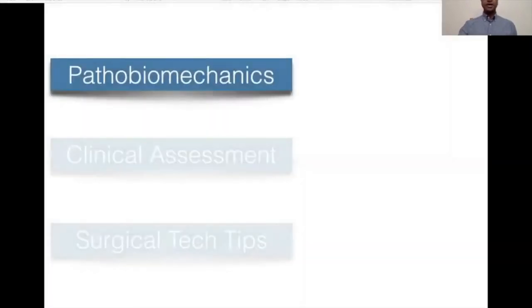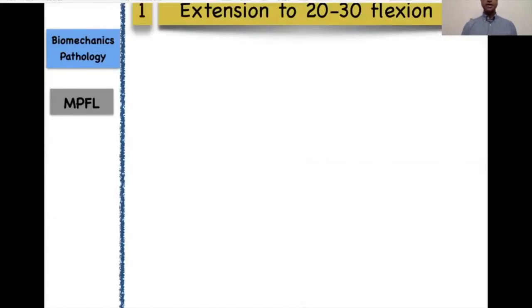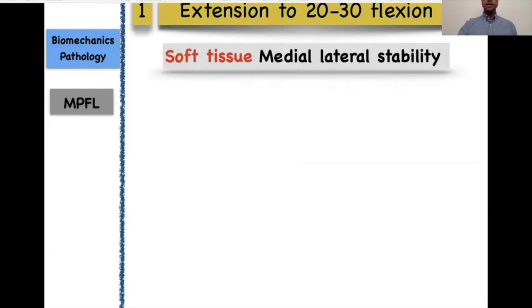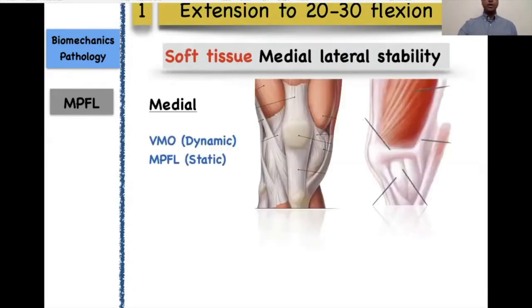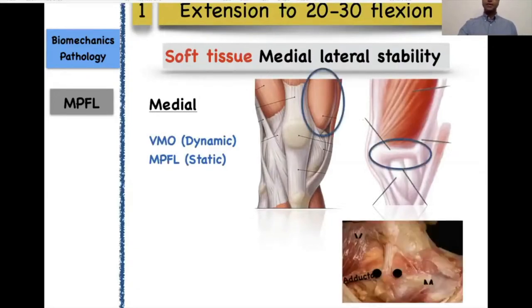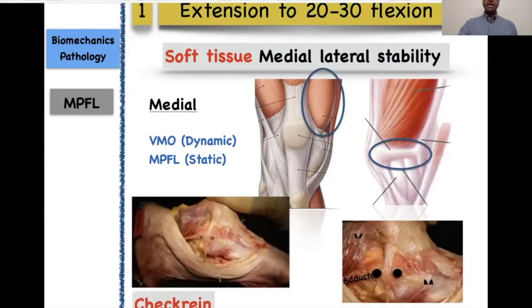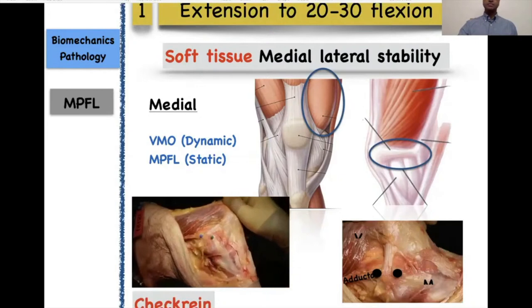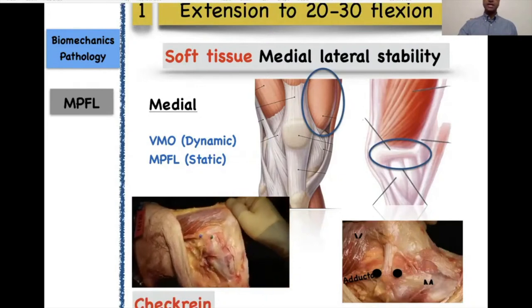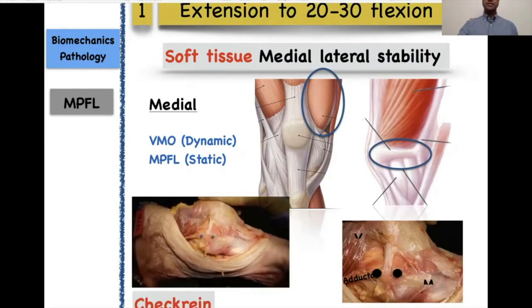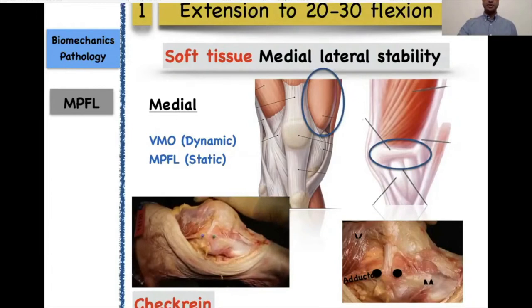If you look at the patho-biomechanics of the knee joint in the extended position, maximum up to 20 degrees of flexion, stability is provided by soft tissue. On the medial side, there is dynamic stability from the VMO and static stability from the MPFL. MPFL is a check rein — it is not pulling the patella medially, but it is stopping abnormal lateral displacement of the patella.